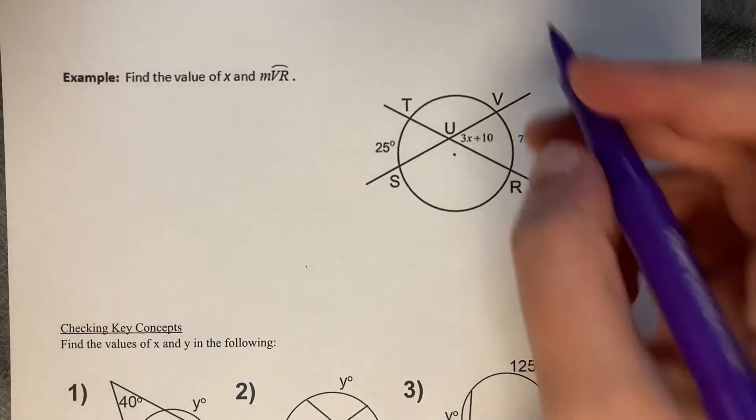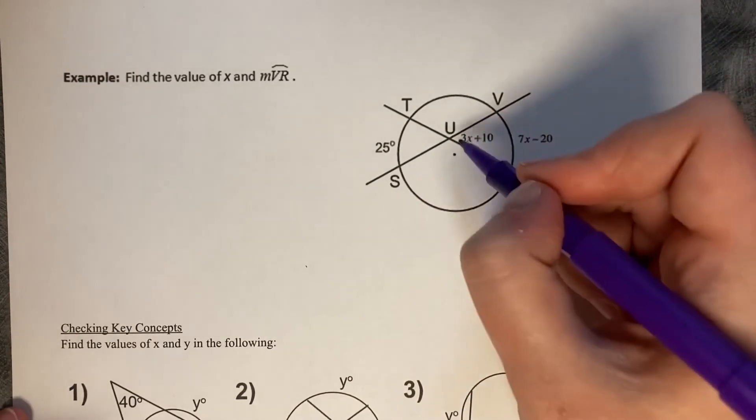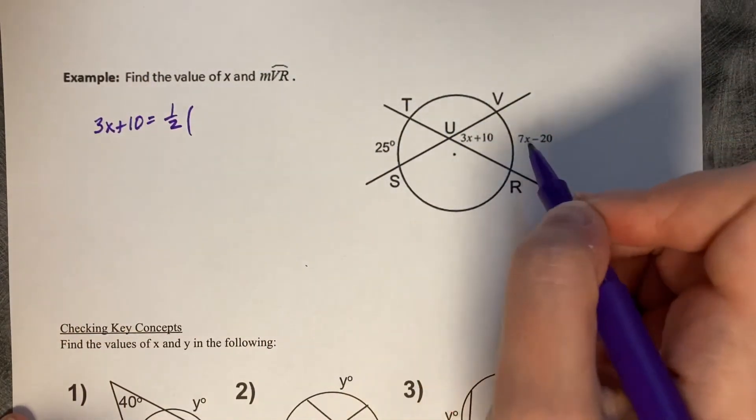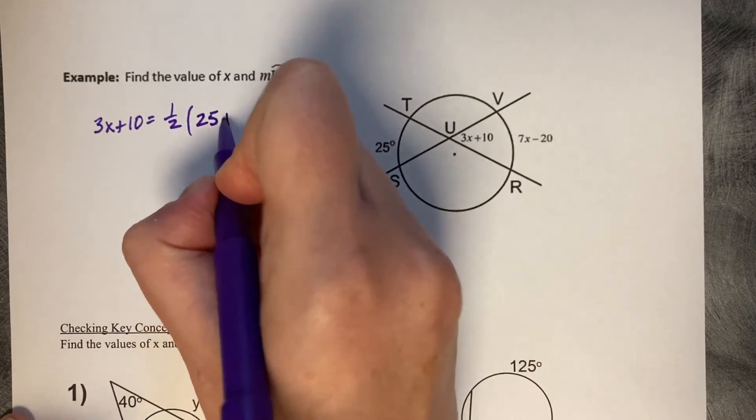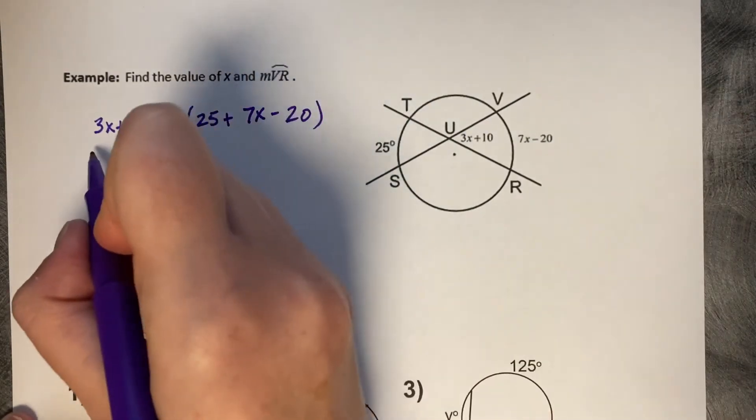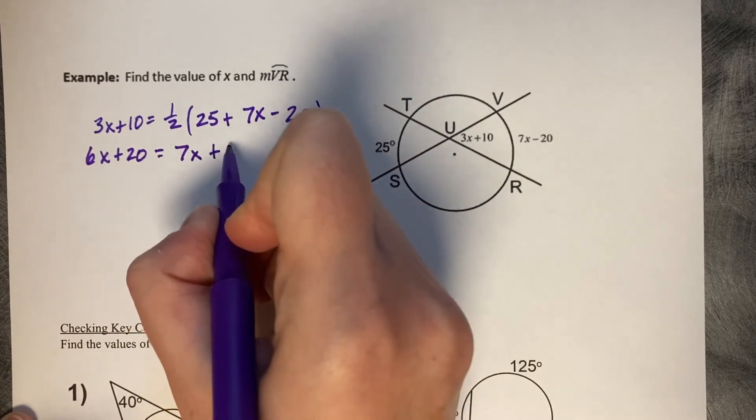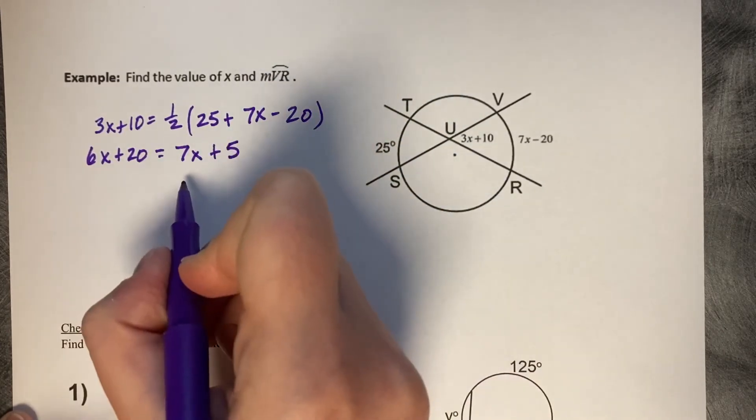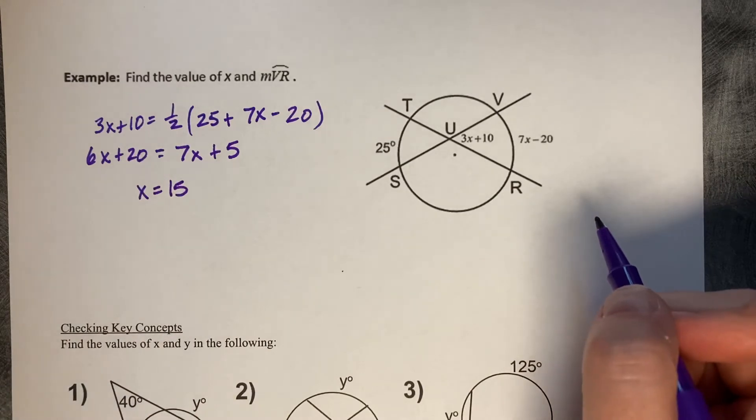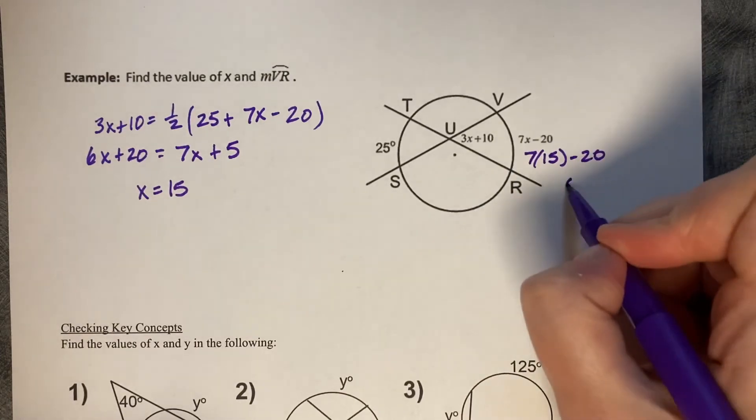Let's take a look at this one. Find the value of X in the measure of VR. So, here's my interior angle and its corresponding arcs. The angle, 3X plus 10, is equal to half the sum of its intercepted arcs, 25 plus 7X minus 20. So, 6X plus 20 equals 7X plus 5. So, X equals 15. And then we want to know VR. So, we just substitute it back in: 7 times 15 minus 20, which is going to be 85 degrees.